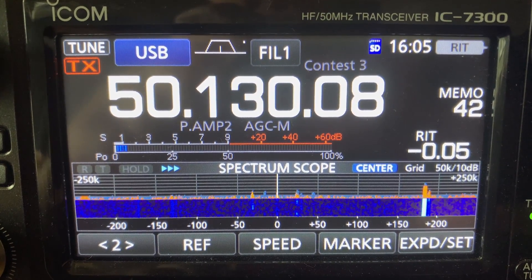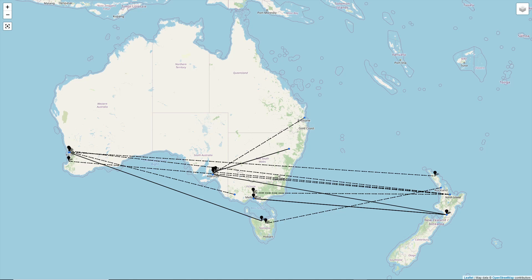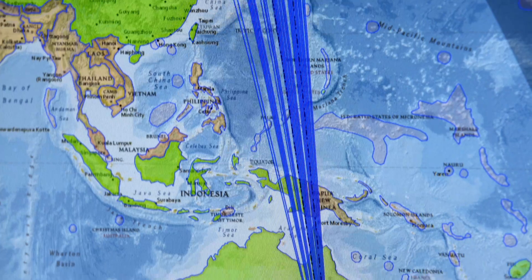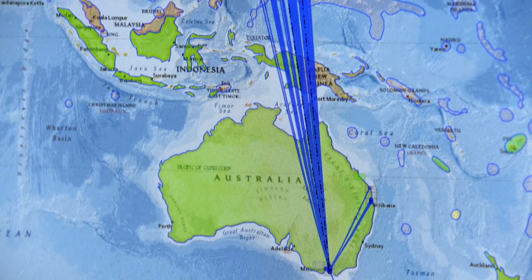Sporadic E, as the name suggests, is unpredictable, and there are multiple causes that are still being pursued by researchers. Being in the right place at the right time is the key.